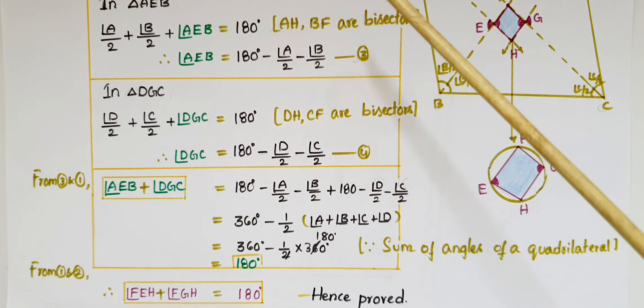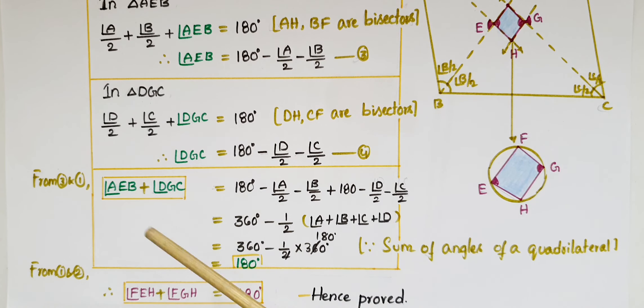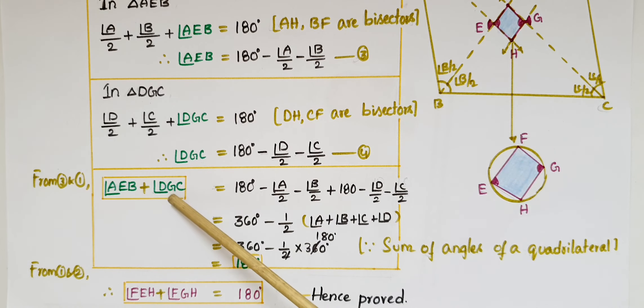From equations 1 and 2, angle AEB equals angle FEH and angle DGC equals angle FGH. Therefore, angle FEH plus angle FGH equals 180 degrees, which proves that quadrilateral EFGH is a cyclic quadrilateral.